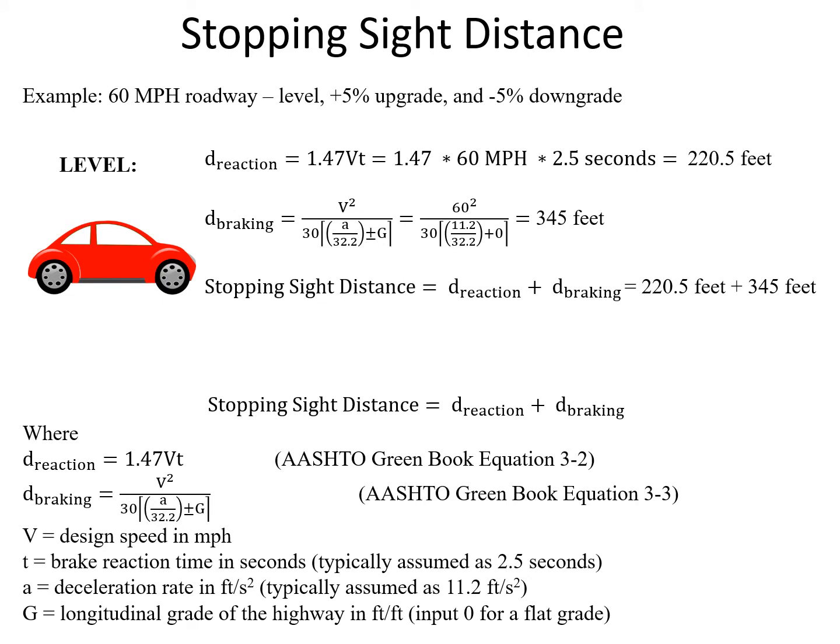To find the overall stopping sight distance, we add the reaction distance and the braking distance — 220.5 feet and 345 feet — to get an overall stopping sight distance of 565.5 feet.